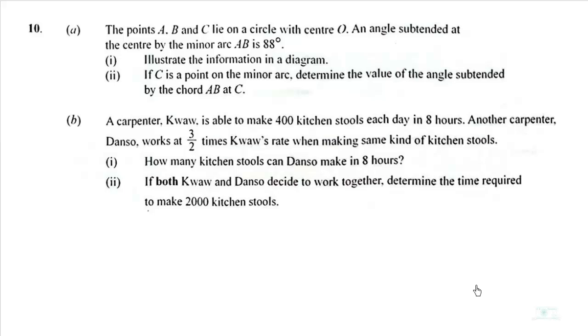Let's look at the B part of the question. A carpenter, Kuo, is able to make 400 kitchen stools each day in 8 hours. Another carpenter, Danso, works at 3 over 2 times Kuo's rate when making the same kind of kitchen stools. How many kitchen stools can Danso make in 8 hours? If both Kuo and Danso decide to work together, determine the time required to make 2000 kitchen stools.